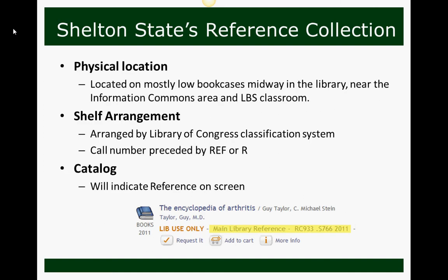Regarding Shelton State's reference collection, it is physically located on the low bookcases midway in the library, near the information commons area and between the commons area and the LBS or electronic classroom. They are arranged using the Library of Congress classification system, and all reference books will be preceded by REF or R in the call number.